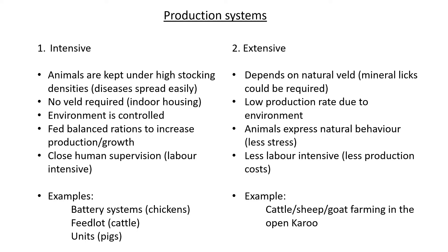Examples of intensive production include battery systems — battery chickens kept in close quarters but in large numbers. There are also feedlots for cattle, and units called piggeries where pigs are held in small cages. The pigs can't move much, but this allows piglets to keep drinking from them. The sows are also fed lots of feed and nutrients so they produce plenty of milk for the piglets.